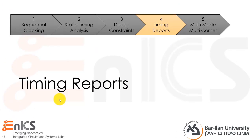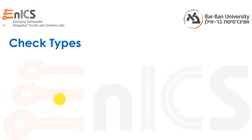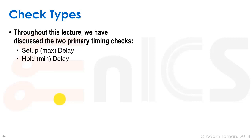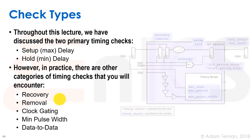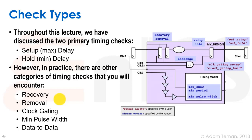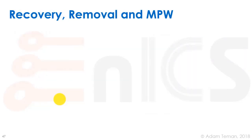Now that we've finished discussing the design constraints, let's go into the actual timing reports that are used both for optimization and for us to check our design. We'll start discussing check types. Throughout this lecture we've discussed the two primary timing checks: setup (or max delay) and hold (or min delay). However, in practice there are a few other categories you'll encounter: recovery, removal, clock gating, minimum pulse width, and data-to-data.